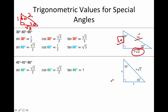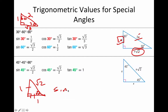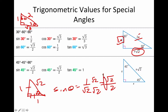For 45-45-90 triangles, remember this is an isosceles right triangle with ratio 1 : 1 : √2. If you look at an angle and sine of θ = 1/√2, you're not allowed to leave it that way — rationalize the denominator by multiplying by √2/√2 to get √2/2.